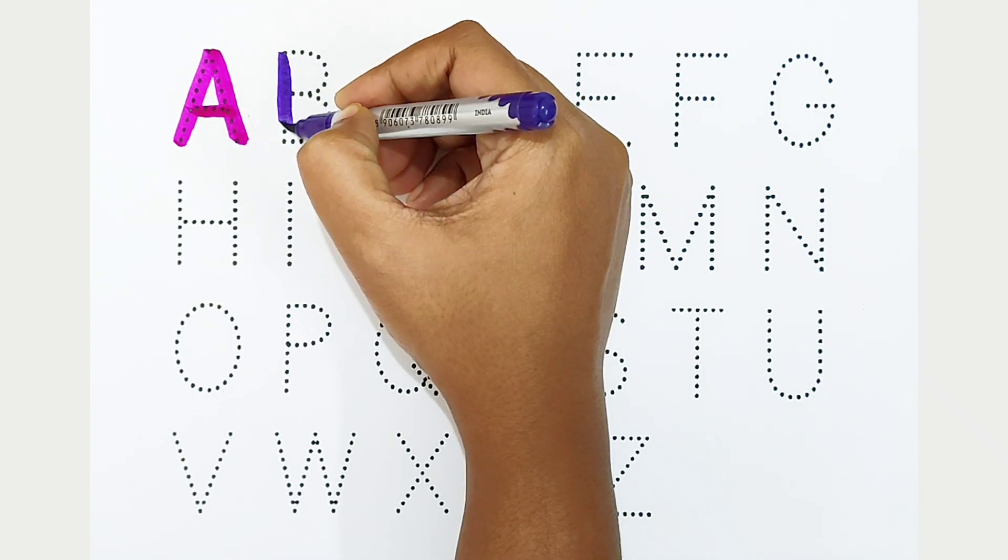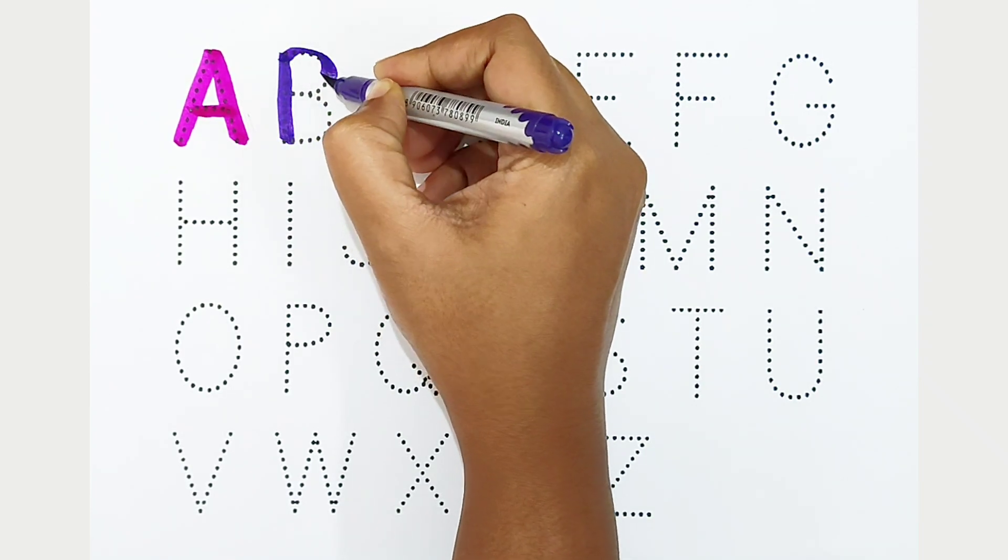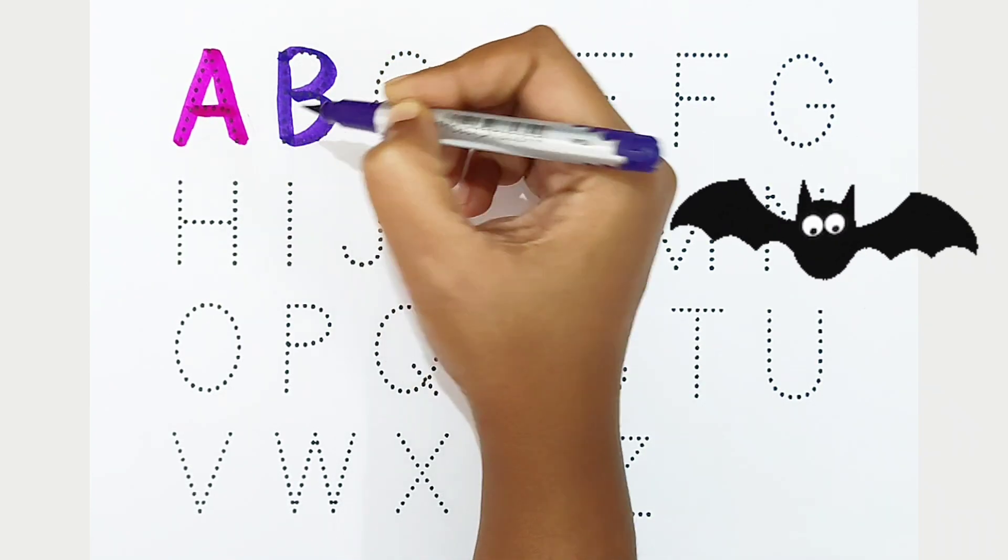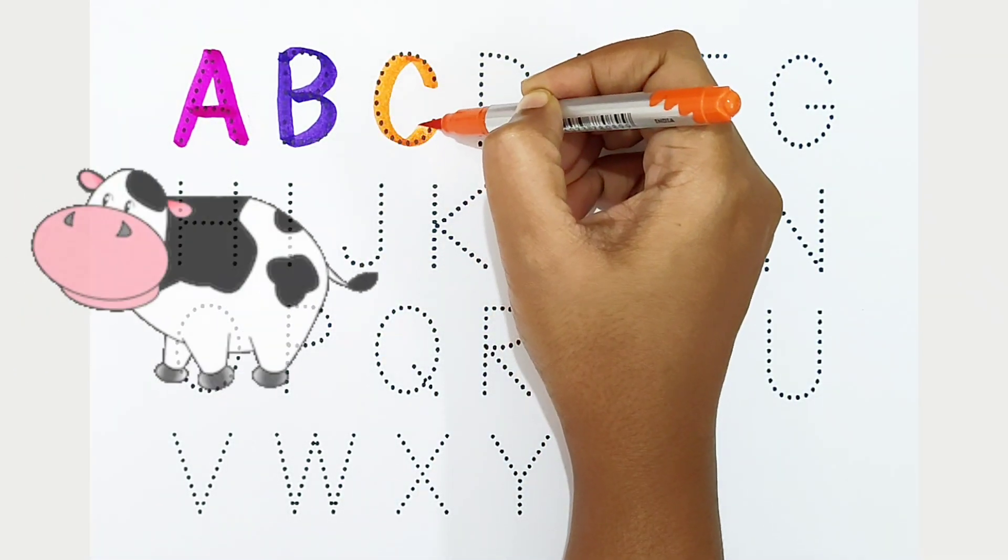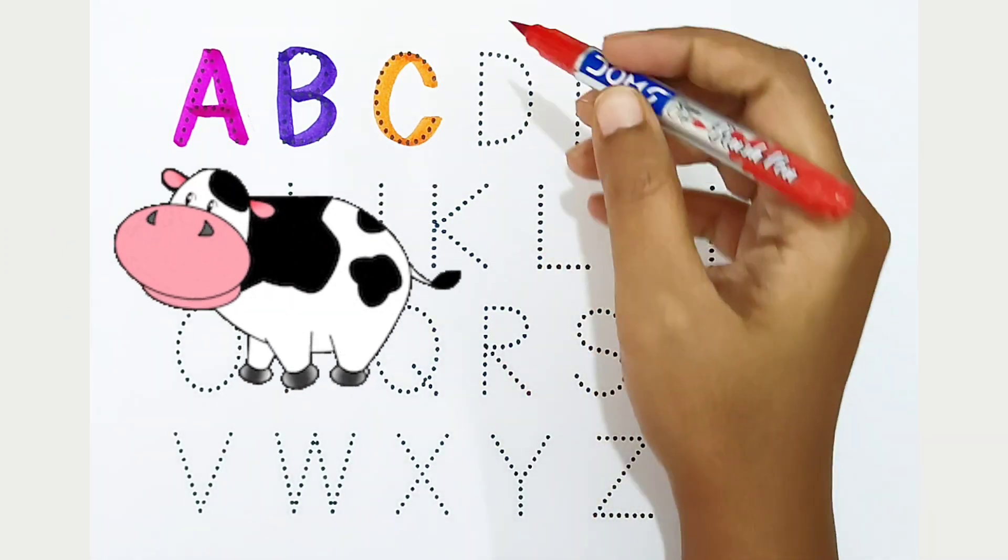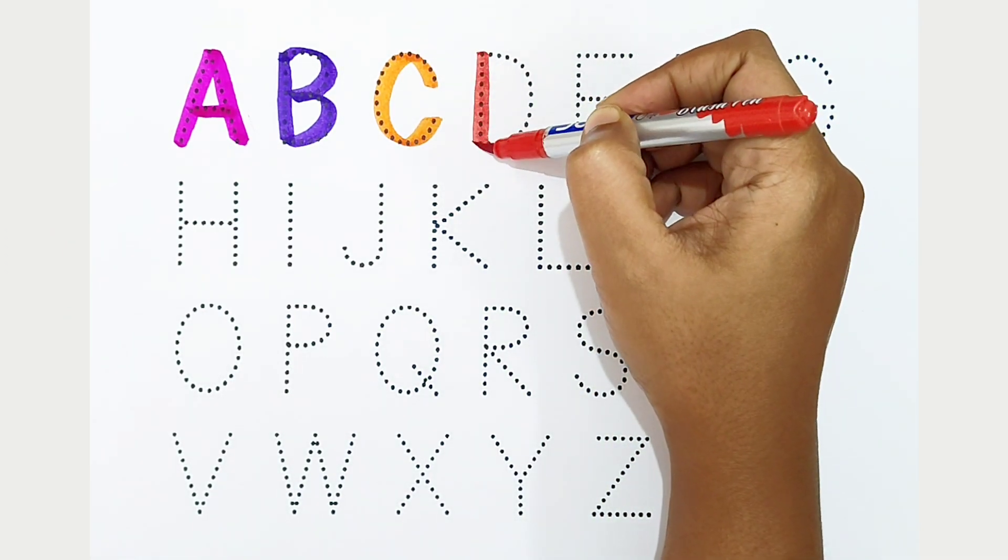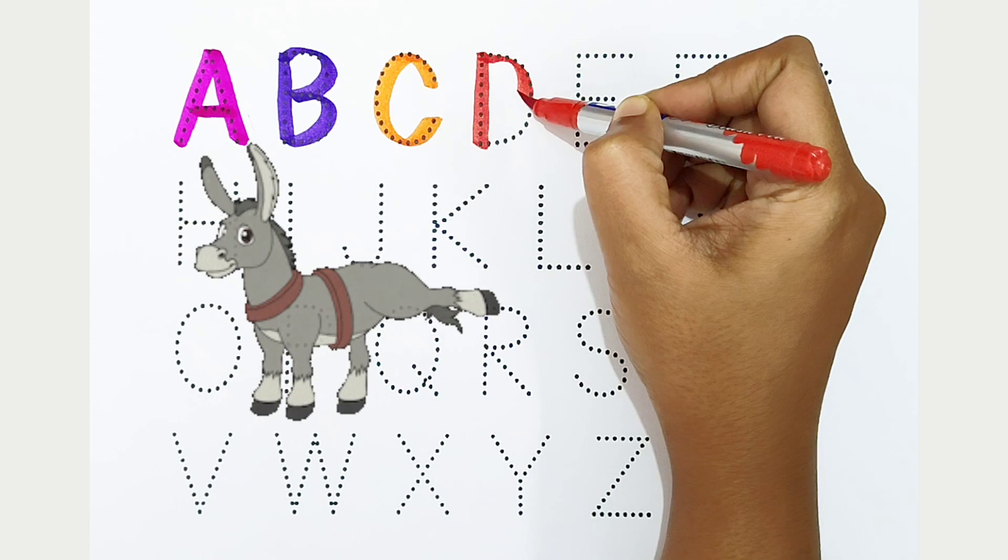A, dark pink color. A is for apple. B, violet color. B is for bat. C, orange color. C is for cow.